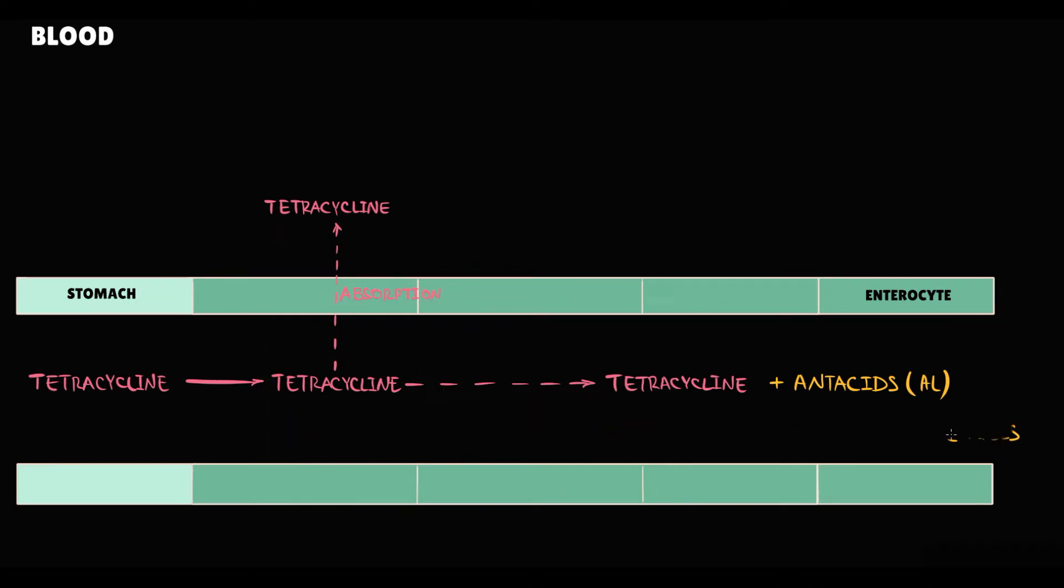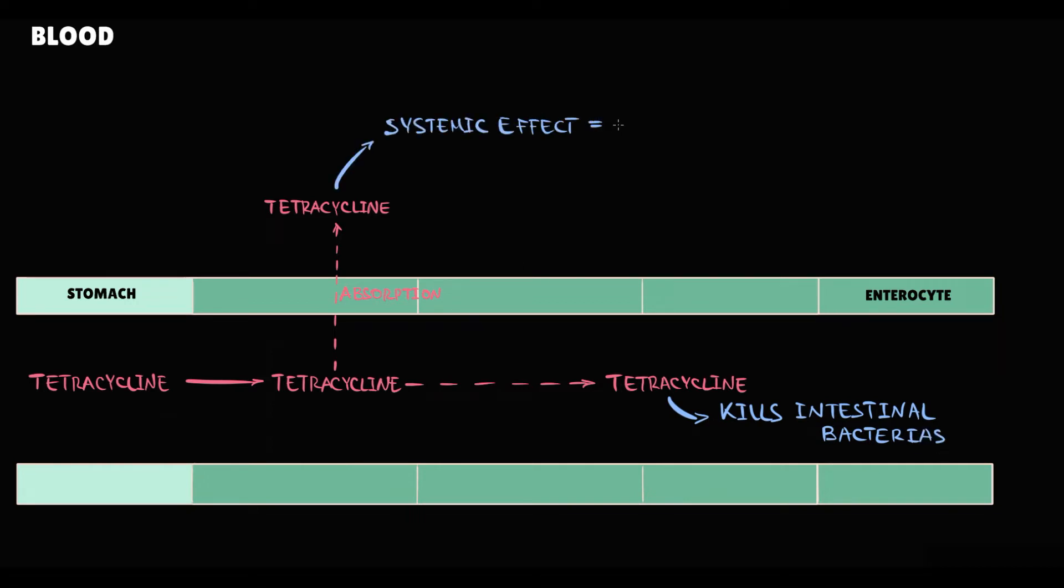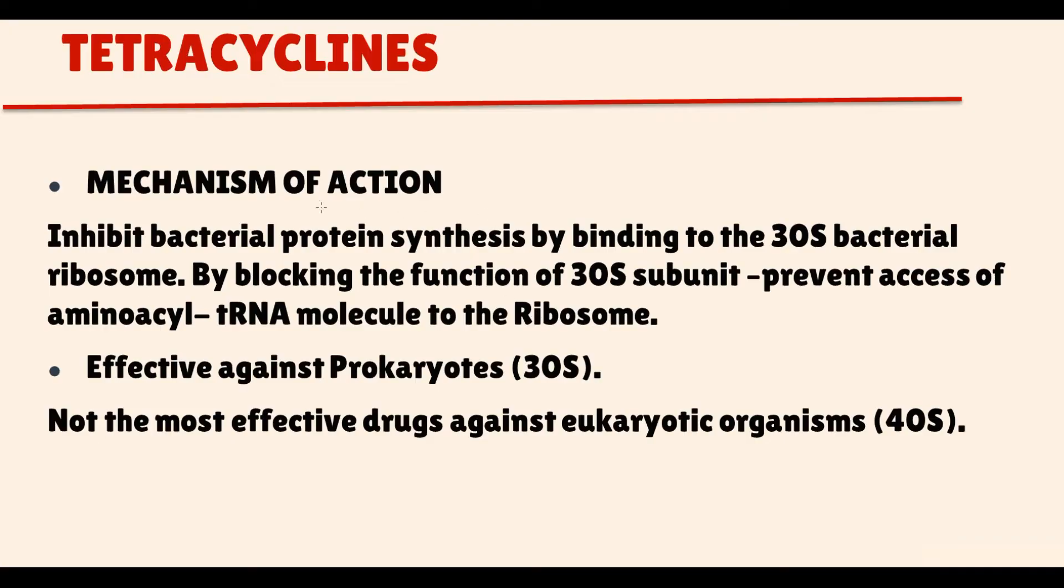So tetracycline that remains in the intestine can kill intestinal bacteria. Tetracycline that is absorbed into the blood provides a systemic effect and kills bacteria in various tissues throughout the body. So how does tetracycline kill the bacteria? What is the tetracycline mechanism of action?